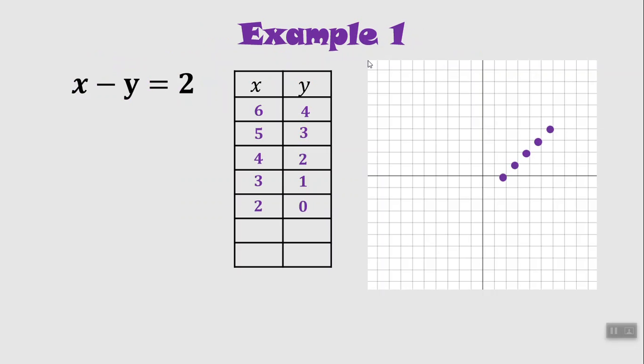You can see that these are all lining up in a line. That's why this kind of equation with an x in it and a y, no exponents, but just an x and a y, they might have a coefficient or they might not, but there's no exponent involved. If it's an x and a y, it's called a linear equation because all the solutions are going to line up in a single straight line.